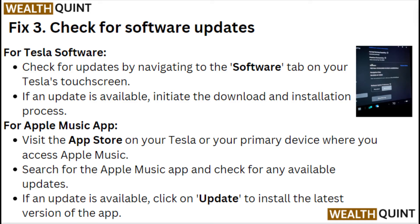Fix 3: Check for Software Updates. For Tesla software, check for updates by navigating to the Software tab on your Tesla's touch screen. If an update is available, initiate the download and installation process. For the Apple Music App, visit the App Store on your Tesla or your primary device where you access Apple Music. Search for the Apple Music App and check for any available updates. If an update is available, click on Update to install the latest version.